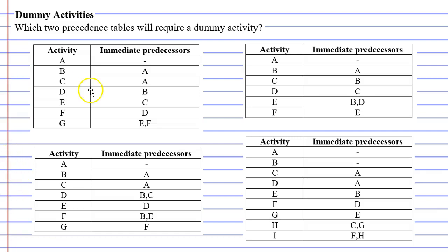Alright, the solutions are the table here on the top right and the table here at the bottom left. Why is that? Well, for the one at top right, if we look at activities C and E, you'll notice that they both share an immediate predecessor. They share the immediate predecessor B. And there's also an immediate predecessor that they don't share. They do not share the immediate predecessor D.